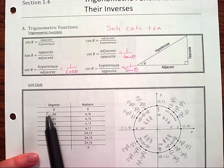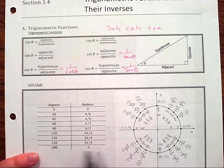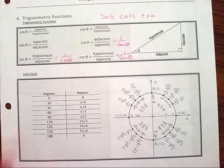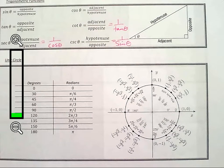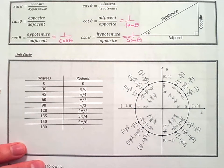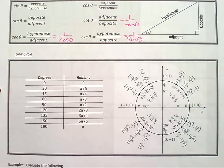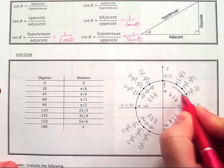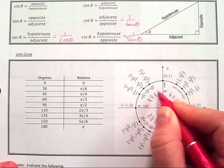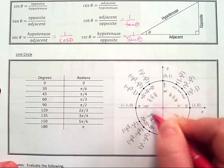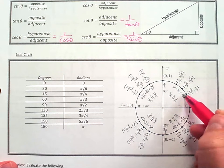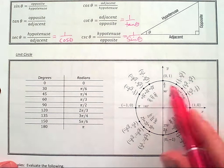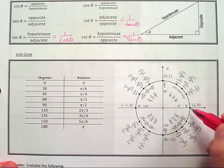Next we have the unit circle and the conversion between degrees and radians. On the unit circle, on the inside I have degrees, and on the outside I have radians — those are the measures of the angles. Here I have different points on my unit circle. 'Unit' means length 1, so the radius of this circle is 1.